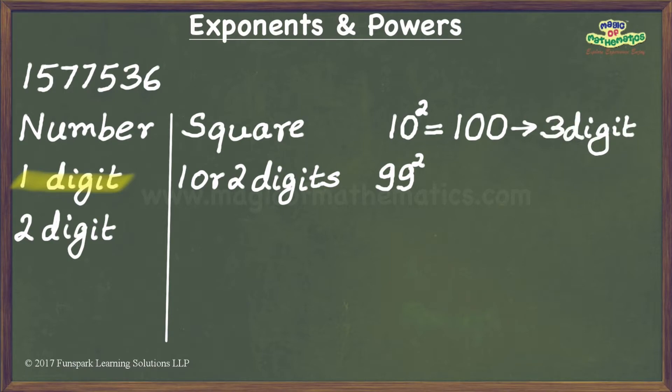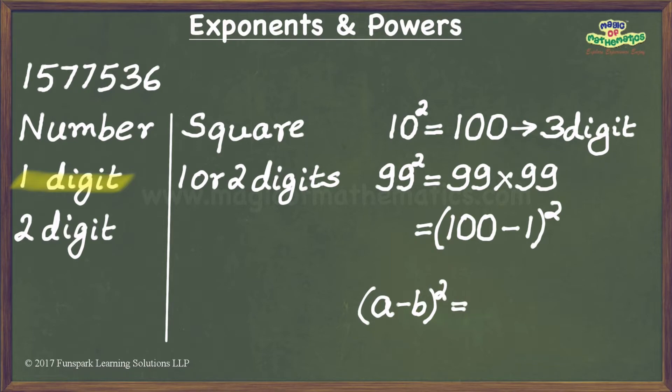We can compute the square of 99 by either multiplying 99 with itself, or by writing 99-squared as 100 minus 1 the whole-squared, and then using the algebraic identity a minus b the whole-squared equals a-squared minus 2ab plus b-squared. However, we don't really need to compute the value of 99-squared. All we need to find out is the number of digits it contains.